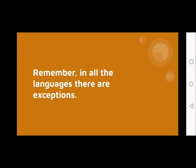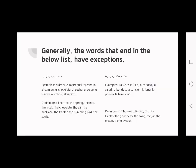Generally, the words that end in the letters listed below have exceptions: words ending in l, o, n, e, r, i, u, s. For example, 'árbol' — a tree — in this case we're taking into consideration two exceptions: the word starts with a vowel 'a', but it also ends in 'l'.